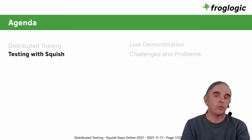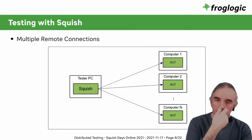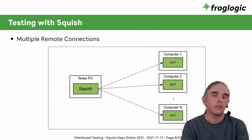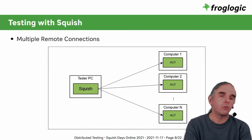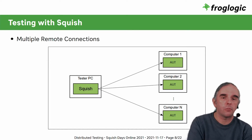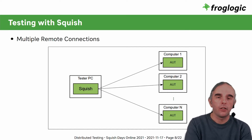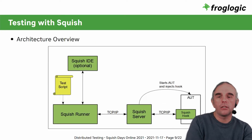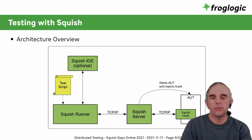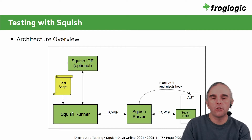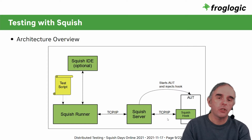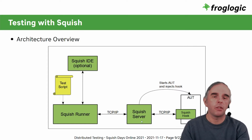Let me explain how to test such distributed systems with Squish. The main idea is to connect Squish on the tester PC to all different computers that have some kind of GUI presented to end users. Before going into the details, let me remind you of the overall architecture of Squish. Squish has three main components: Squish Runner, Squish Server, and Squish Hook. Usually all three components run on one machine, but you can split them depending on your use case.